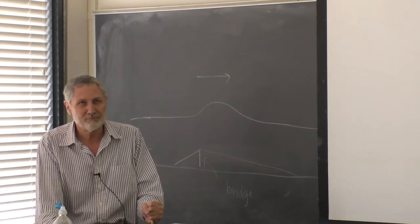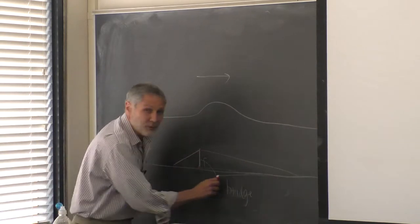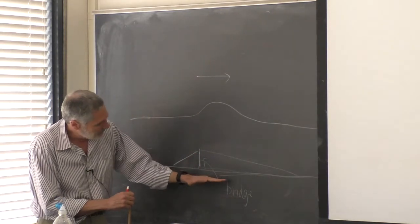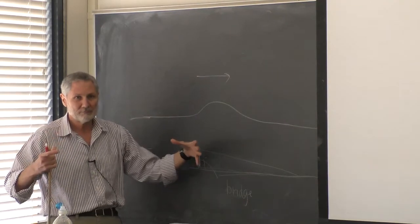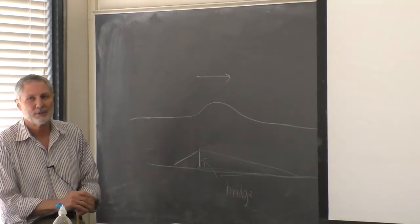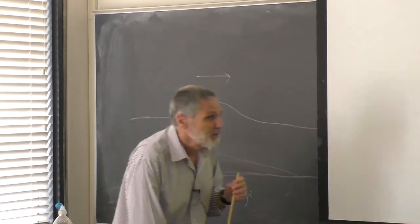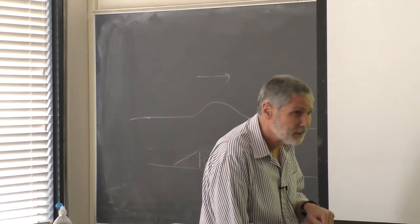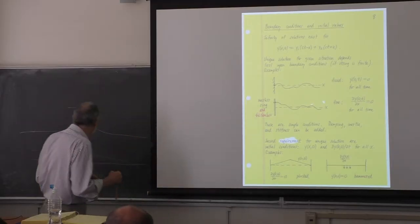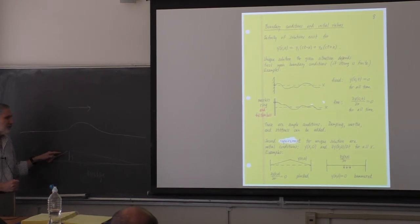So the conclusion is: a pulse coming into a free boundary reflects as the same pulse, upright, traveling in the opposite direction — as opposed to the inverted pulse at a fixed boundary. We can't have a kink in the string at the free end because at a point that is not being driven, a kink would mean a net force on an infinitesimal mass element, producing infinite acceleration. So the slope must be zero.